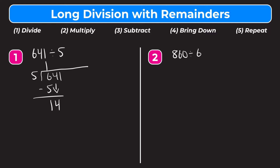We ask how many full groups of 5 can fit into 14. That's going to be 2. We multiply: 2 times 5 is 10. Step 3 is subtract: 14 minus 10 is 4. Step 4 is bring down, so we bring down our 1. And step 5 is repeat.